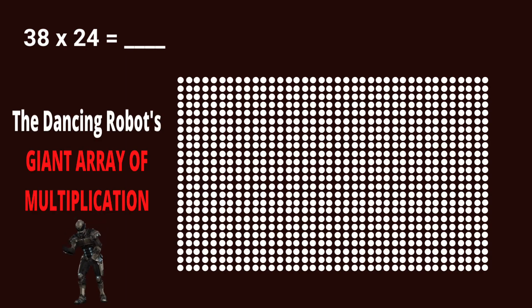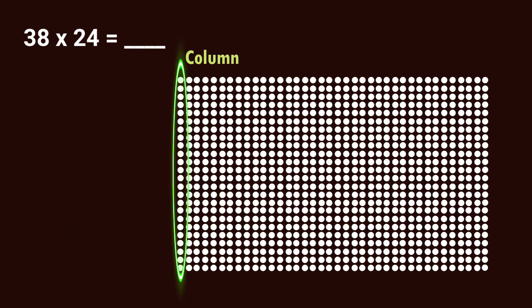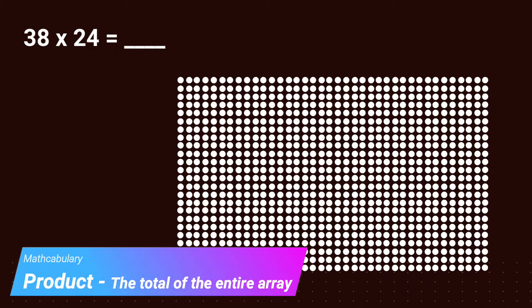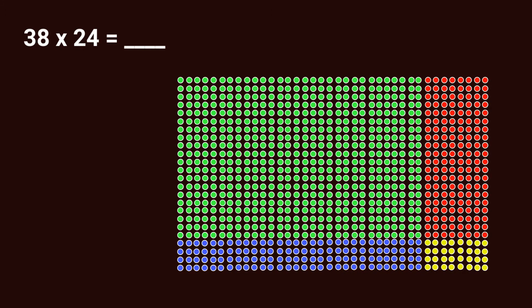Here we have a giant array — we have 38 columns and 24 in each of those columns, thereby 38 groups of 24. Because when we're doing multiplication, we're trying to find the product, which really is the total of the entire array. What we're going to do is split it up using our distributive property knowledge, and now we're actually going to have four groups. I'm going to color code them for you right now.